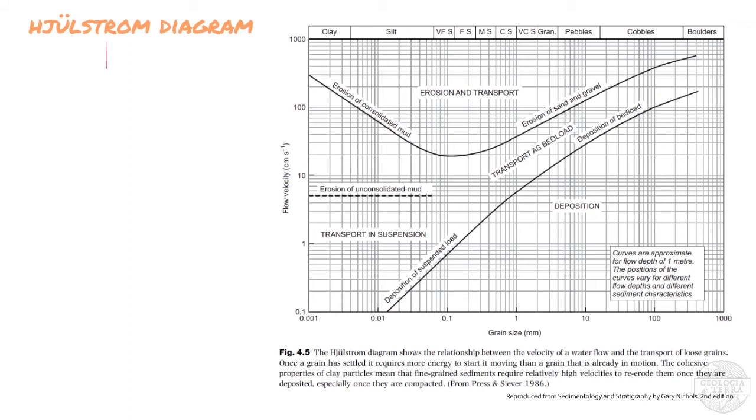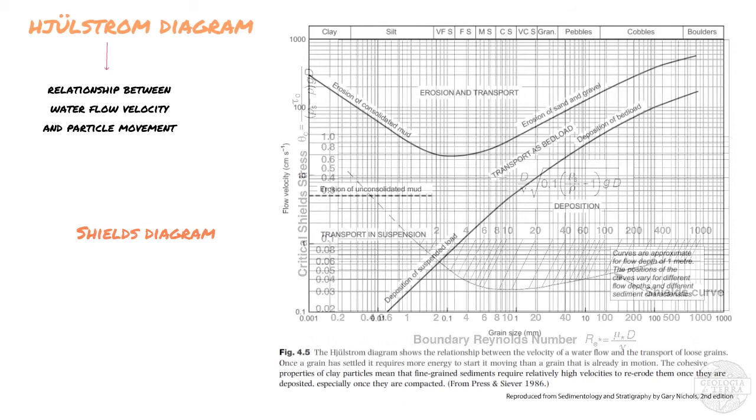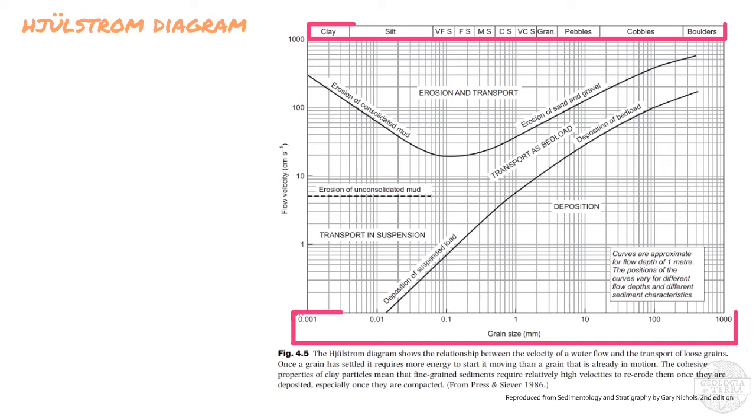The relationship between water flow velocity and movement of particles of different grain sizes can be visualized using the Hjulström diagram. Probably not pronounced this way, but anyways. But this diagram has been superseded by the Shields diagram in 1977, but it is still useful for understanding sediment movement in currents.